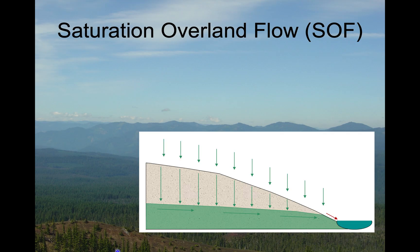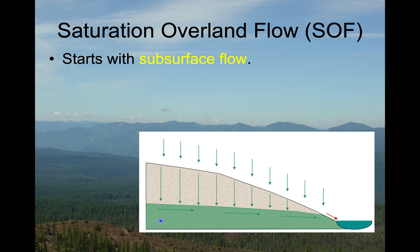Let's look at it in cartoon form. To start saturation overland flow, we actually have to have rainfall infiltrating into the ground, coming down to a water table in the saturated zone, and then flowing downslope in that saturated zone as subsurface flow. Now this can be subsurface storm flow that I talked about in a previous video, or it can be your general all-purpose regional water table and groundwater flow.